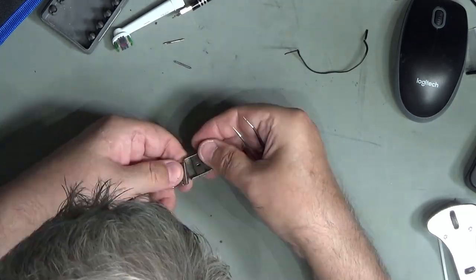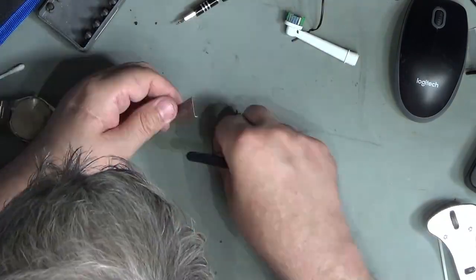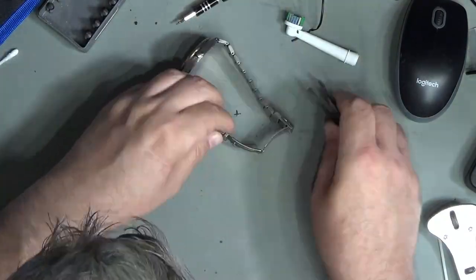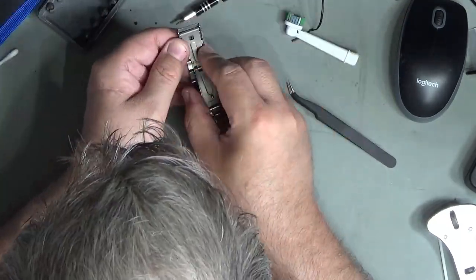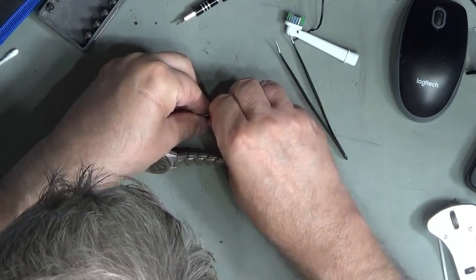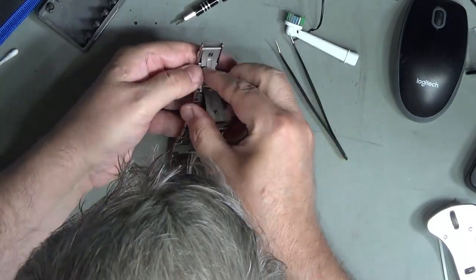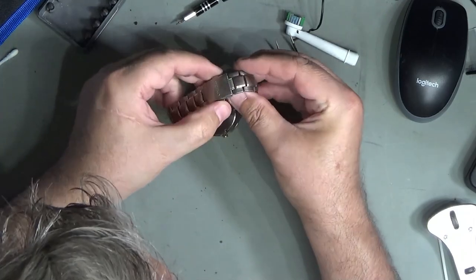I didn't actually use the ultrasonic bath for the clasp in the end, I just left it in a jar of IPA just to soak and that seems to have pretty much done the job. I just need to give it a little bit of a scrub. We're basically at the end now, just reassembling the clasp for the second time because I put it on backwards the first time.